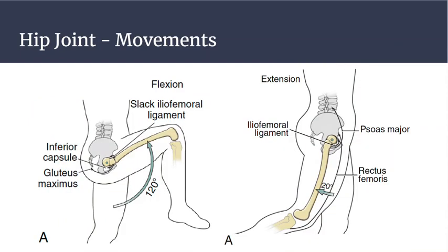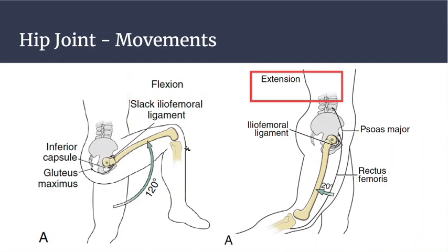Let's look at the broader hip joint movements. It's important to know the movements because then you can overlay the muscles that cause them. The hip joint has three degrees of freedom, so it moves in all three planes. In the sagittal plane, we have hip flexion and hip extension. Hip flexion does not require knee flexion — you can have your knee extended and it's still hip flexion. This occurs around a medial-lateral axis.